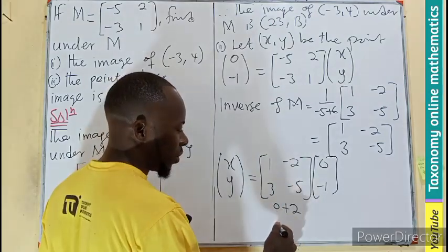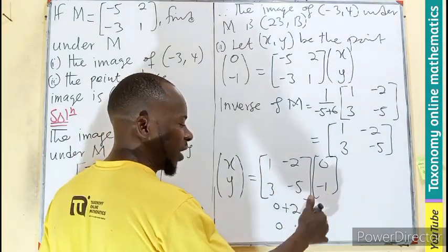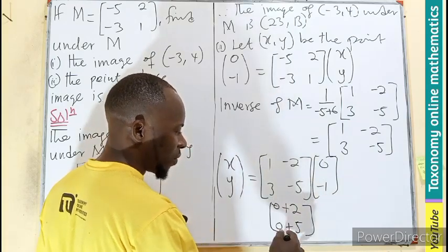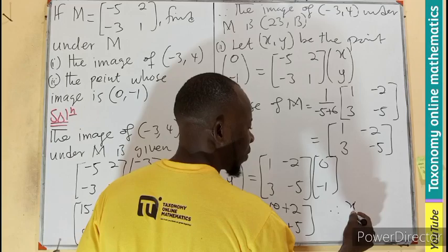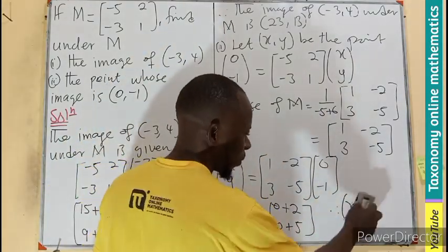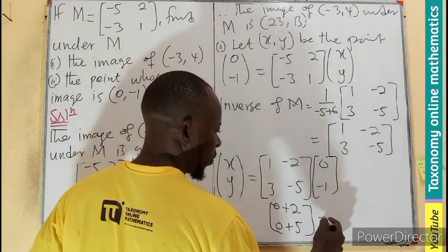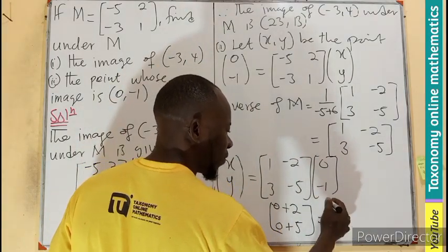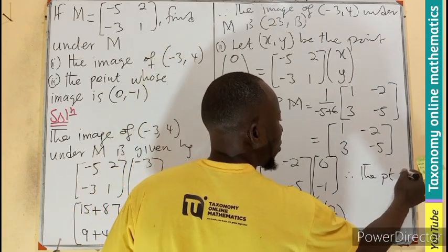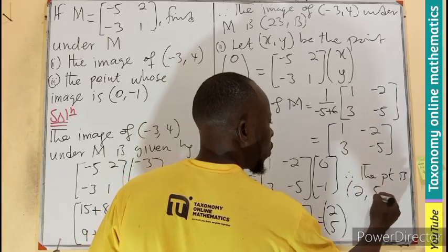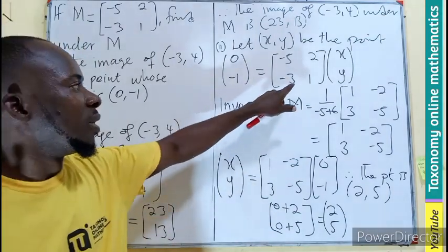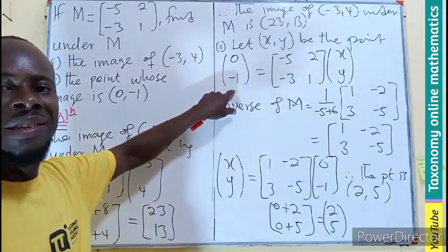3 times 0, 0. -5 times -1. So therefore, this is going to be 2 and 5. So therefore, the point is going to be (2, 5). This is the point that translated this to give us this as the image.